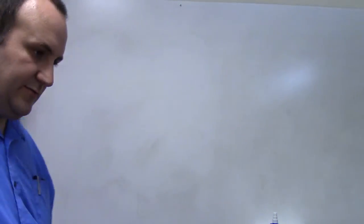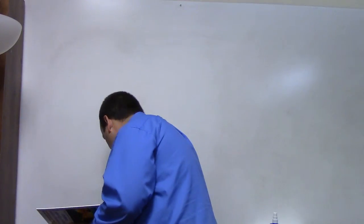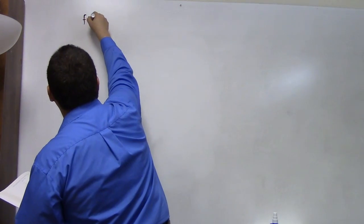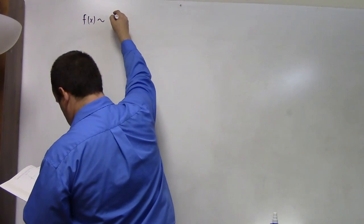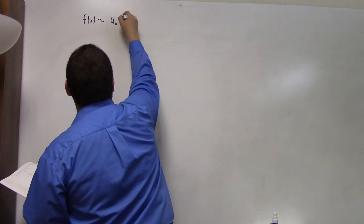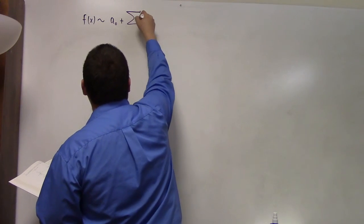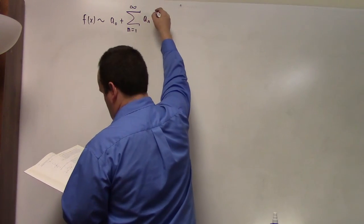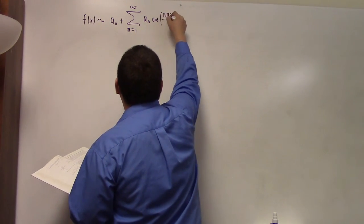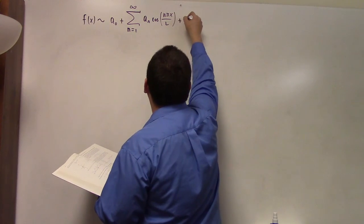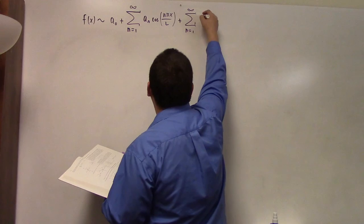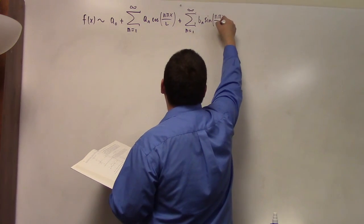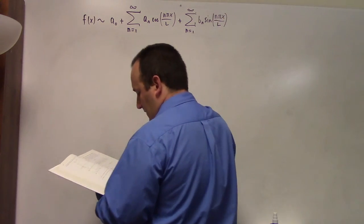So you guys asked me — in Haberman, it would seem, and I hadn't even picked up on this — little a-n versus big A-n, and it's pretty simple. He has f of x basically equal to a-naught plus the sum from n equals 1 to infinity of a-n cosine(nπx/L) plus the sum from n equals 1 to infinity of b-sub-n. So you guys have pointed out that he's got some capitalization in other spots. This is the so-called full Fourier series.